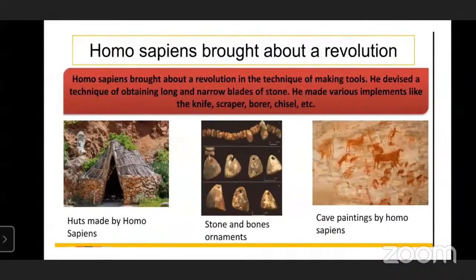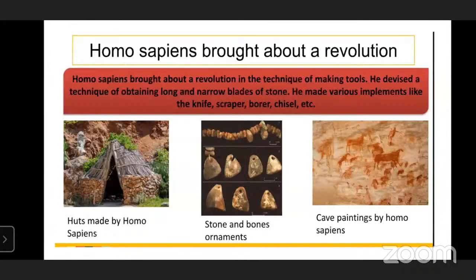After Homo Erectus, Neanderthal Man made further progress in tool-making technique and began to make smaller tools. Then Homo Sapiens brought about a revolution in the technique of making tools. He devised a technique of obtaining long and narrow blades of stone and made various implements like the knife, scraper, borer, and chisel from these long blades. He also began to use ivory and rare stones of the quartz variety for making tools and other articles.